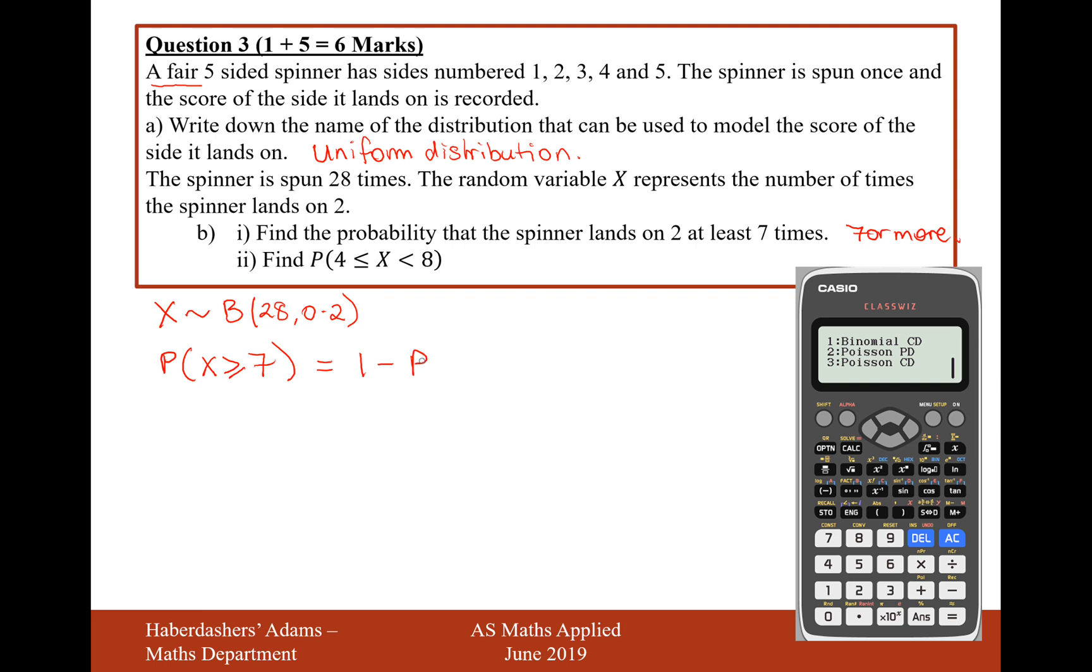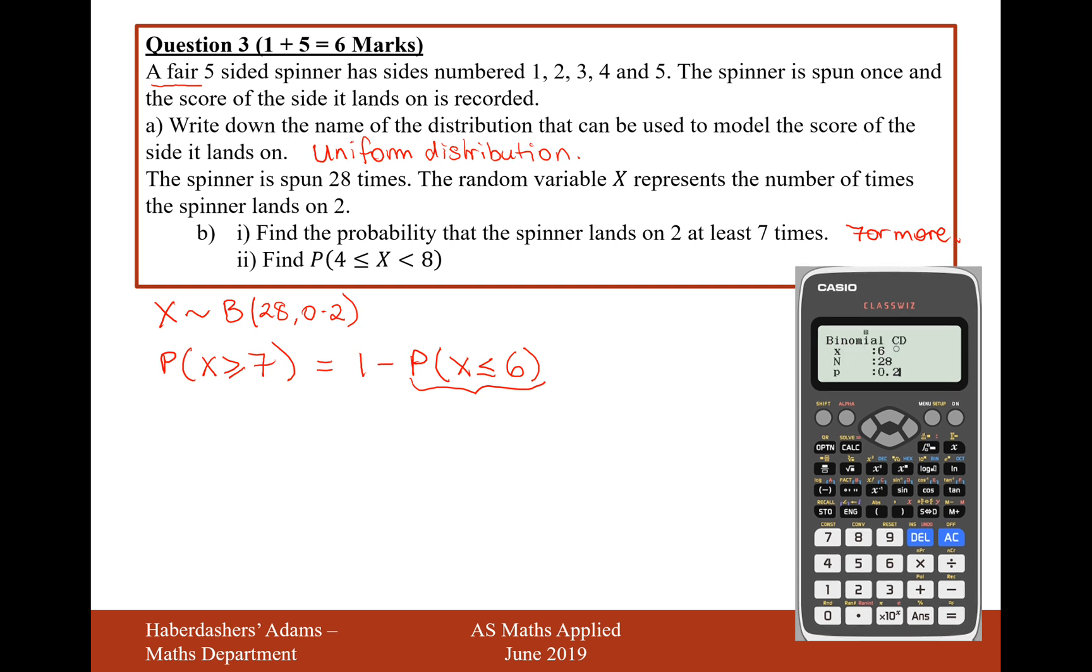This is 7 successes or more. So we need to flip the question round the other way. And I'm going to now calculate 1 minus the probability of x being less than or equal to 6. What this bit here is going to work out is the probability of 6 successes, 6 successful lands on a 2 or fewer. Then once I've worked that out using the binomial CD mode, I'll work out the rest of the probability that we'll add it to 1 because that will give us the remaining probability of scoring a 2 on a dice 7 or more times. So I'll hit 1 to select the binomial CD mode and it's going to be a variable option. I want to work out the probability of 6 or fewer successes out of 28 when the probability is 0.2 and I get an answer there of 0.678.